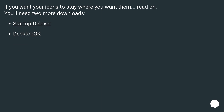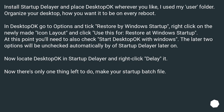If you want your icons to stay where you want them, read on. You'll need two more downloads: Startup Delayer and Desktop Oc. Install Startup Delayer and place Desktop Oc wherever you like — I used my user folder. Organize your desktop how you want it on every reboot. In Desktop Oc, go to Options and tick Restore at Windows Startup. Right-click on the newly made icon layout and click Use this for Restore at Windows Startup, then check Start Desktop Oc with Windows. The last two options will be unchecked automatically by Startup Delayer later on. Locate Desktop Oc in Startup Delayer, right-click, and delay it. Now the only thing left to do is make your startup batch file.